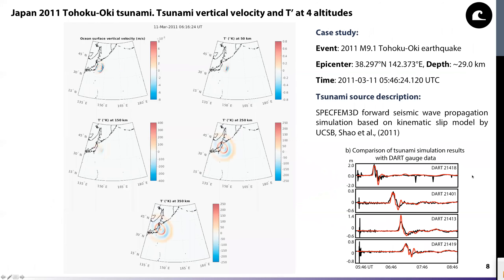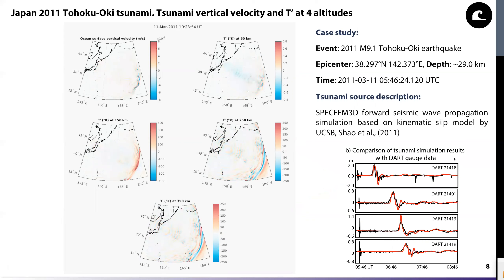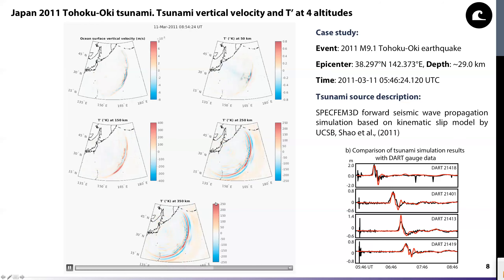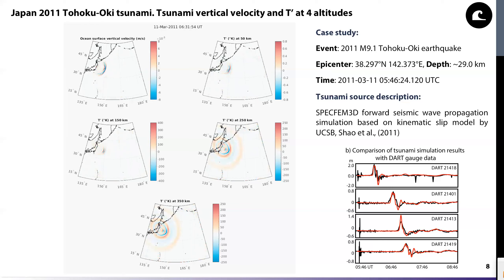I will start the discussion of results with our case study of the earthquake in Japan in 2011, driven by a tsunami. I run a forward seismic wave propagation simulation specifying the earthquake with the kinematic slip model by Shao et al. 2011. On the right is a comparison of tsunami simulation results and observations in the open ocean. On the left you see ocean surface vertical velocities from our simulation and temperature perturbations at four different altitudes — 5, 50, 150, and 350 kilometers — from the MAGIC simulation. This was one of the strongest tsunamis in recent times, with a dominant period of roughly 20–25 minutes and wavelengths between 200 and 350 kilometers depending on ocean depth.